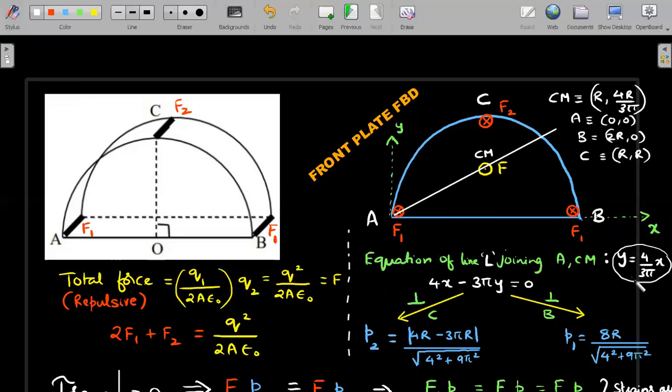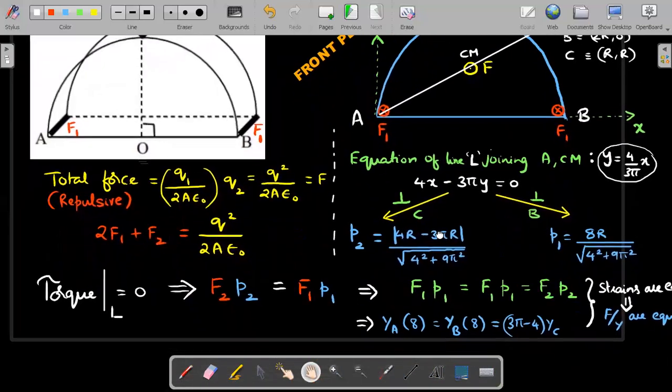Equation of this line, because it is passing through origin is y equals mx. The slope you can easily find. 4x minus 3πy rearranged is the equation of that straight line. From a coordinate x1, y1 onto ax1 plus by1 plus c equals zero, the perpendicular distance would be substituting that coordinate divided by root of a² plus b². This is the perpendicular distance, I'm designating it as p2 for point C. Similarly, p1 is the perpendicular distance from B to this line. So I've found these two numbers ready for my torque calculations.